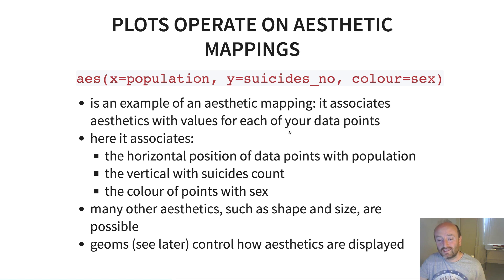And this is an example of what's called an aesthetic mapping. Effectively, it associates aesthetics with values for each of your data points. And aesthetics, they are characteristics that control how potentially your data can look. Essentially, they're characteristics which other things called geoms take and then produce visualizations based on them. So here this aesthetic mapping associates the horizontal position of data points with the population size.